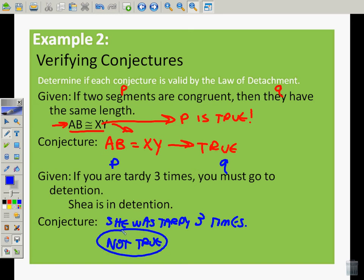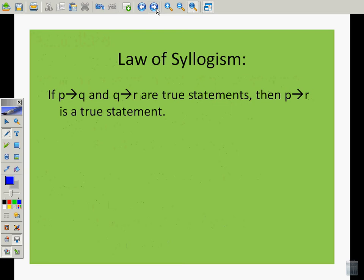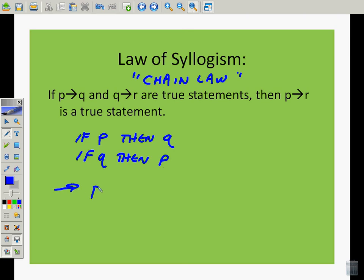We have another law, it's called the law of syllogism. It's also called the chain law. If P then Q, and if Q then R are true statements, then P to R is a true statement. So we would say if P then Q, if Q then R, so we could deduce that if P then R. Chain law, following the chain, cutting out the middle.